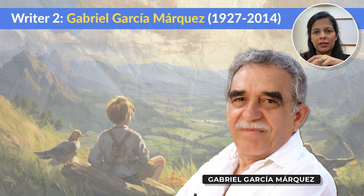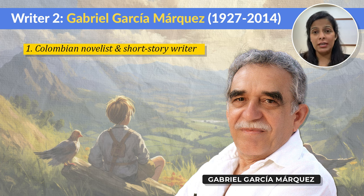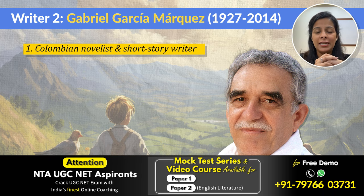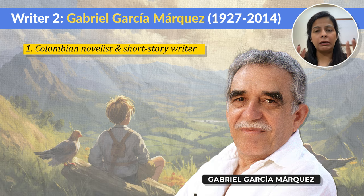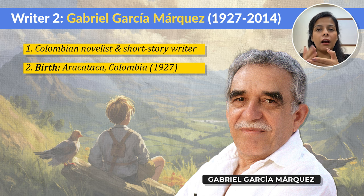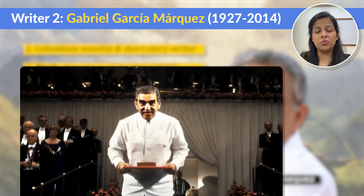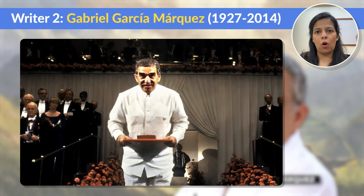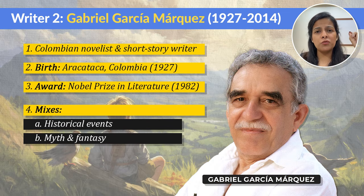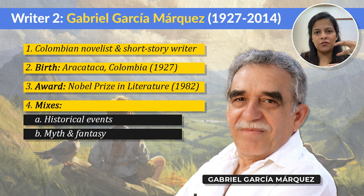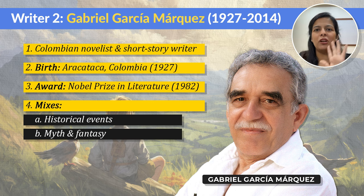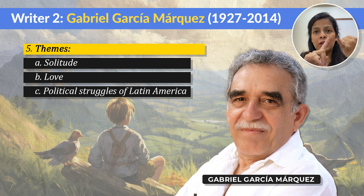Now it's time to look at the second writer: Gabriel García Márquez. He's a Colombian novelist, short story writer, and journalist, considered one of the most important authors of the 20th century — practically a legend. Márquez was born in 1927 in Aracataca, Colombia, a town that became the inspiration for the mythical town of Macondo, which features in most of his books. In 1982, he was awarded the Nobel Prize in Literature, honouring his incredible impact on storytelling and Latin American literature. Like Salman Rushdie, he takes historical events and infuses them with myth and fantasy, so you feel like you're reading about the real world but with a bit of a twist. His stories also explore themes like solitude, love, and the political struggles of Latin America, making his work very relatable and very powerful.